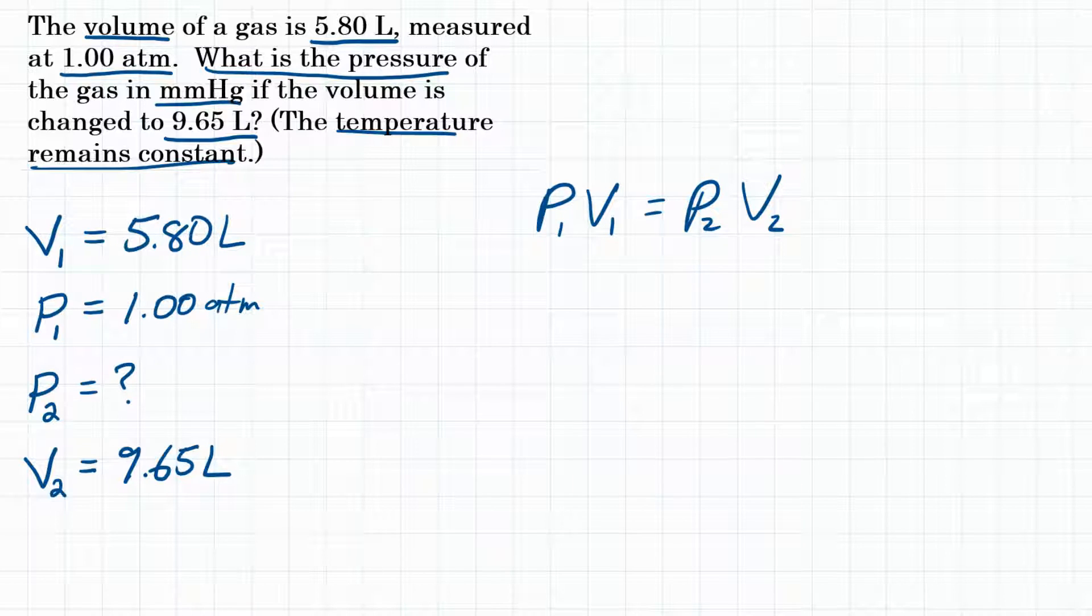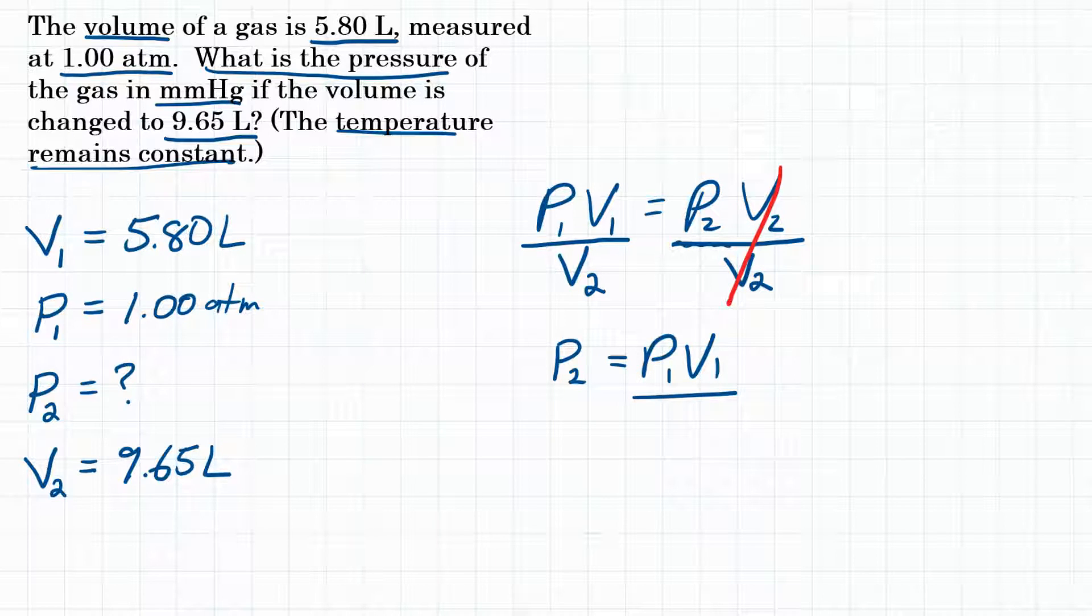So what are we solving for? We're solving for P2. So let's isolate that variable in our equation. To do that, we are going to divide this side by V2 because that will get P2 by itself. But since we did that on the right side, we also have to do it on the left side. So we will divide by V2 on the left side. V2 cancels out so that we're left with the equation that we want. So let's rewrite this as P2 equals P1 V1 over V2.